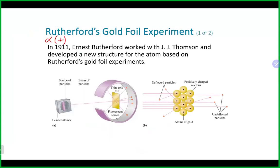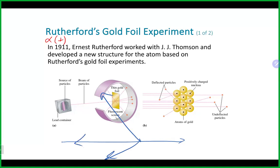They were surprised to find that most alpha particles sailed straight through with no deflection at all. But every so often, an alpha particle would scatter at a very large angle or even come back toward the source. Based on the Plum Pudding model, they expected deflection everywhere because the positive charge was spread out all over. Here we see the source of alpha particles and a detection screen — most went straight through, but occasionally particles scattered at large angles.